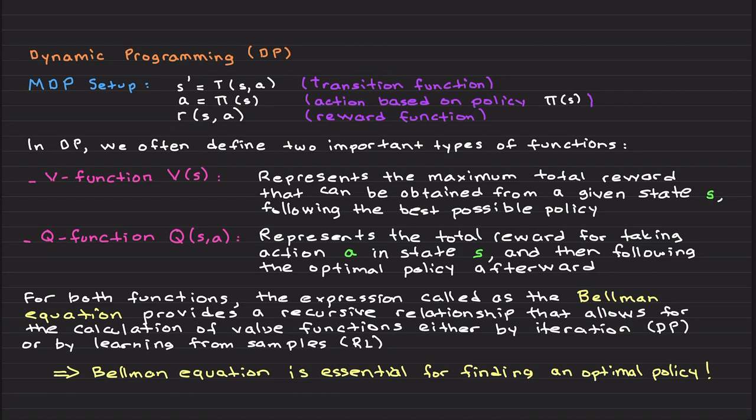Basically, V function only depends on states and it represents the maximum total reward that can be obtained from a given state following the best possible policy.